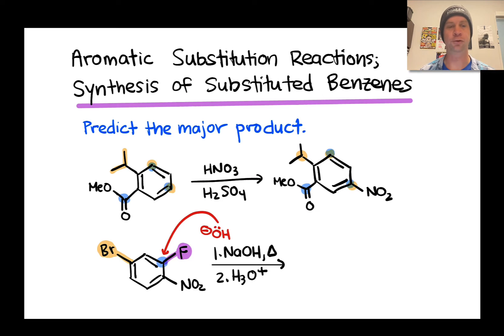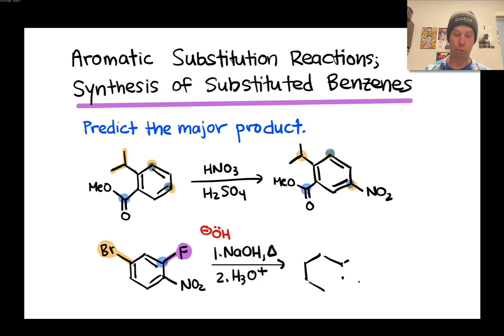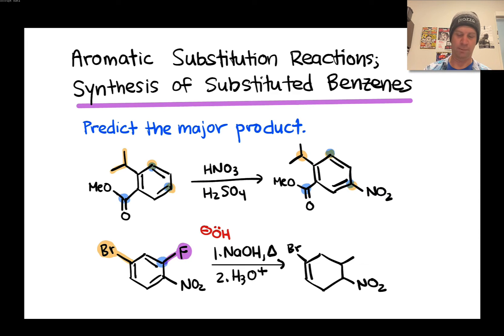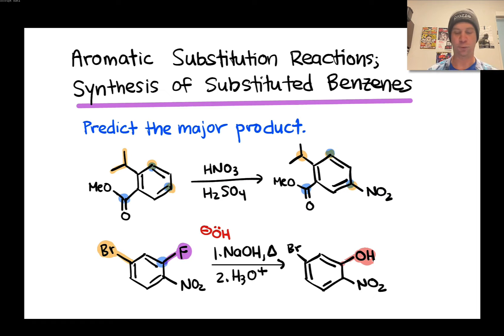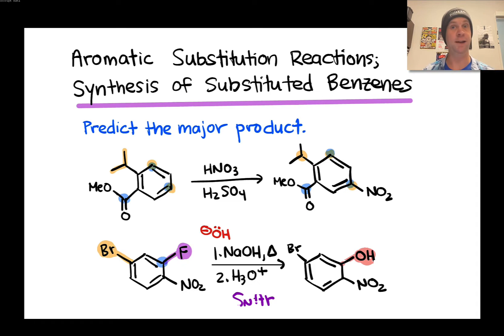Predicting substitution at the bromine isn't the worst prediction, and with excess hydroxide substitution will eventually occur at the bromine-bearing carbon too, but the initially formed product derives from substitution at the fluorine-bearing carbon. That carbon is also ortho to the NO₂ group, feeling a stronger inductive withdrawing effect than the bromine-bearing carbon which is para. The product has a new C–O bond with fluoride departed — that's SNAr, with a mechanism of nucleophilic addition followed by beta elimination.